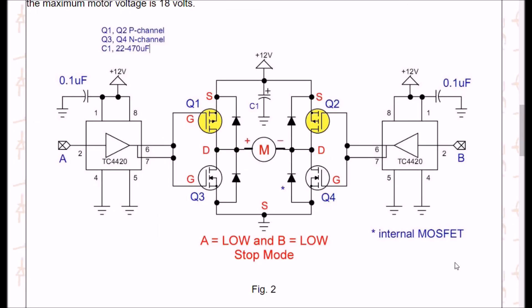Alright, illustrated here is A is going to be low, and B is going to be low, and this is going to turn on Q1 and Q2, switching both sides of the motors to VCC. This is known as the stop mode.